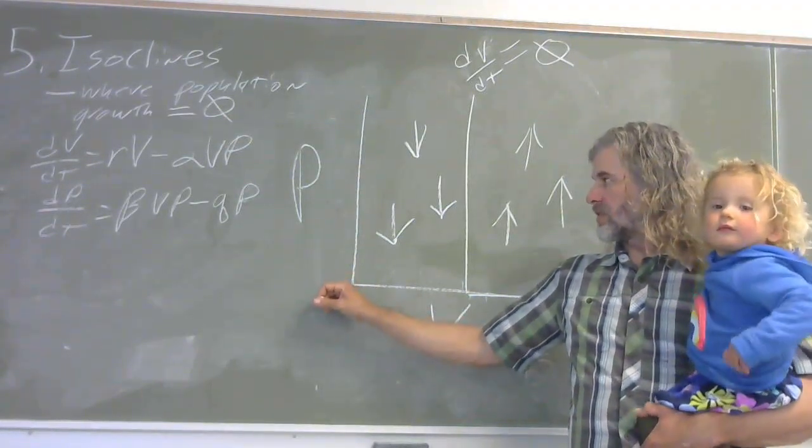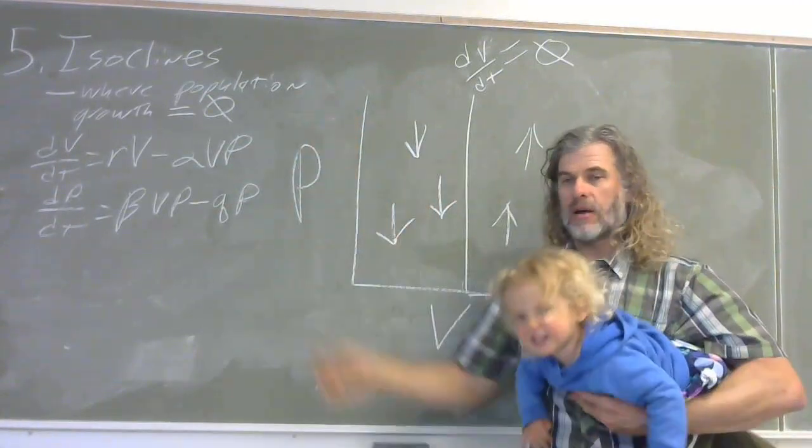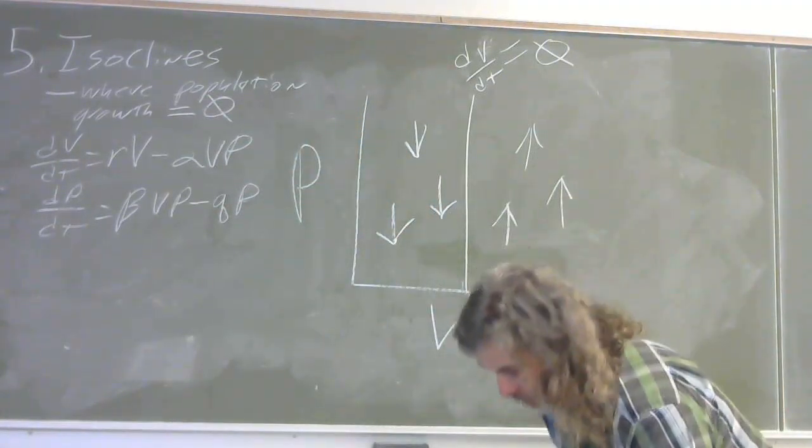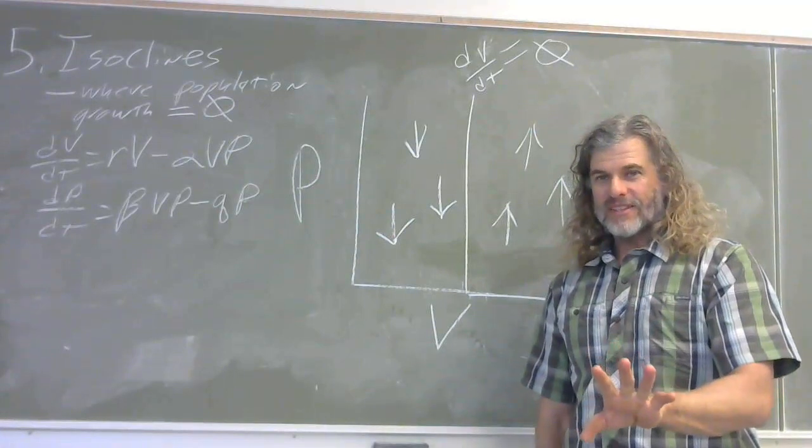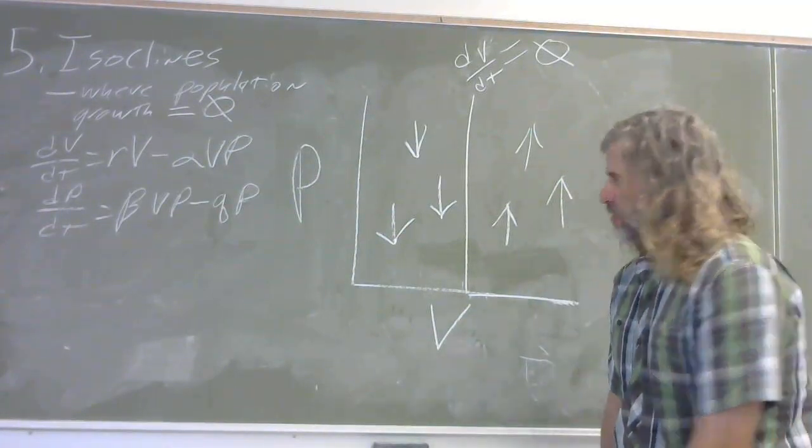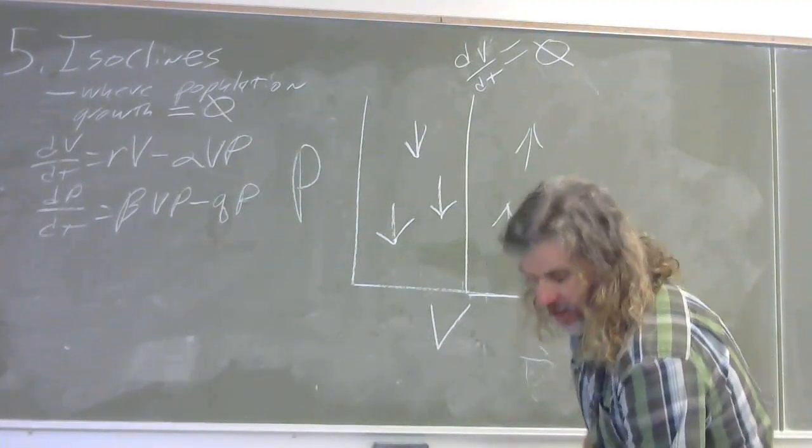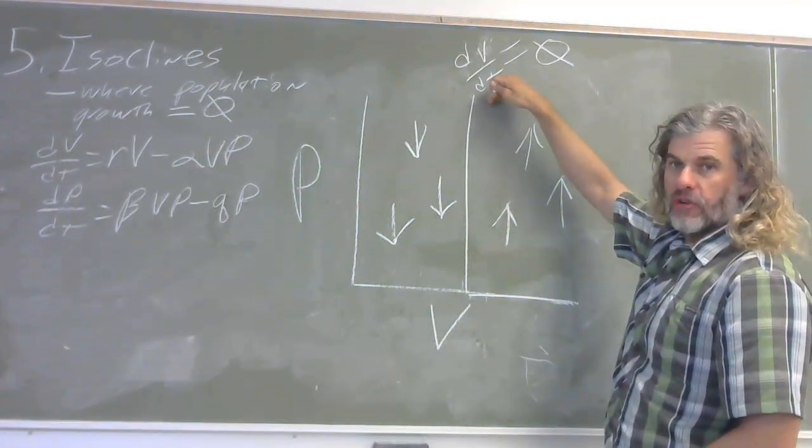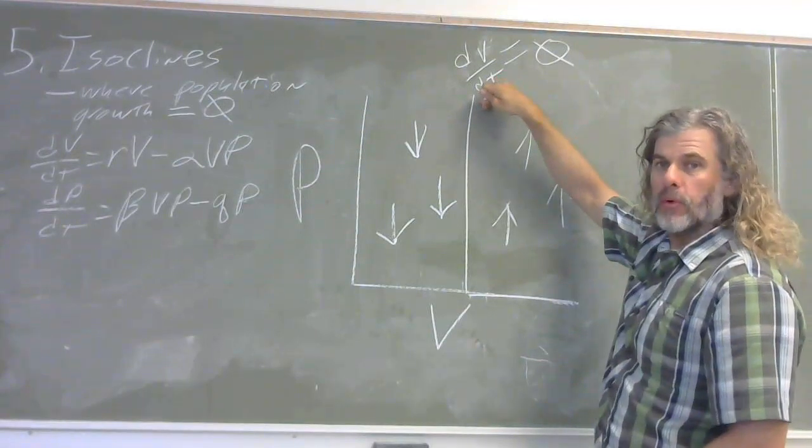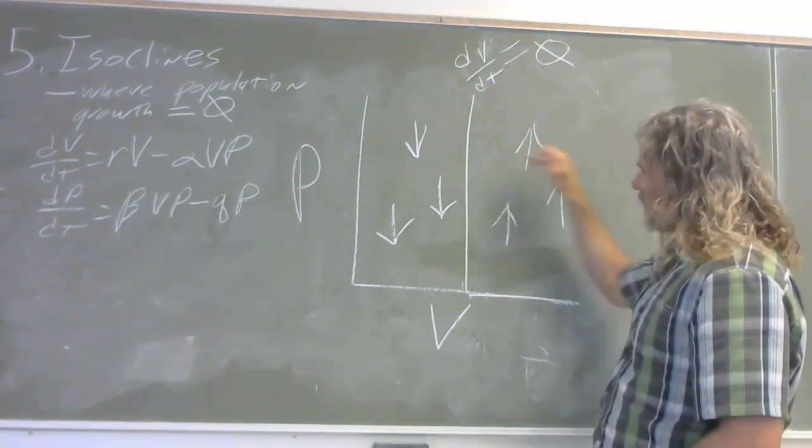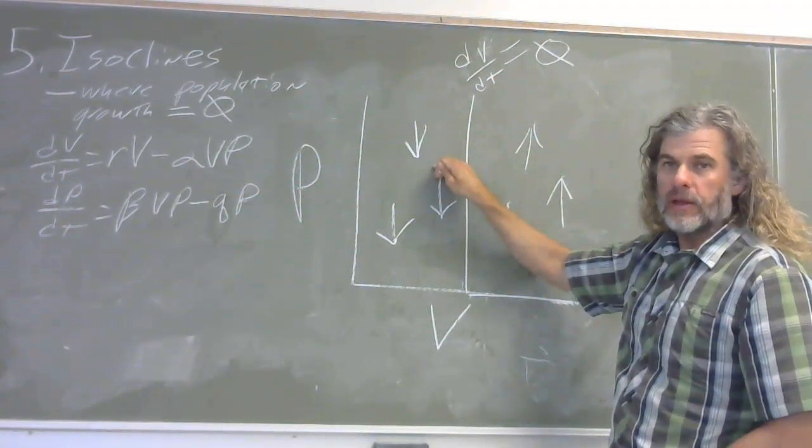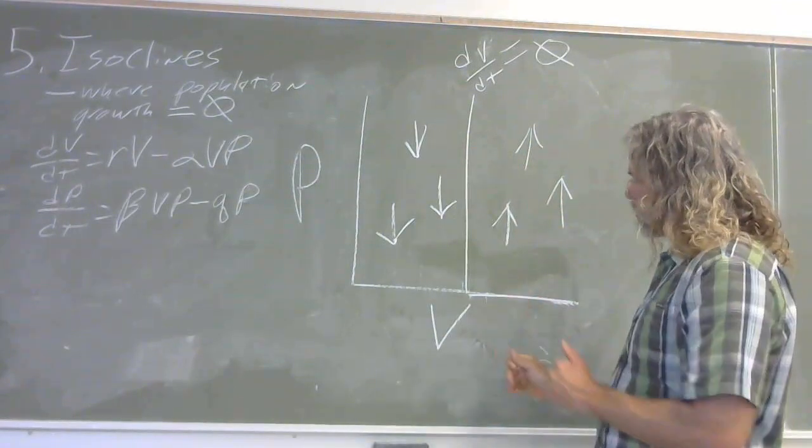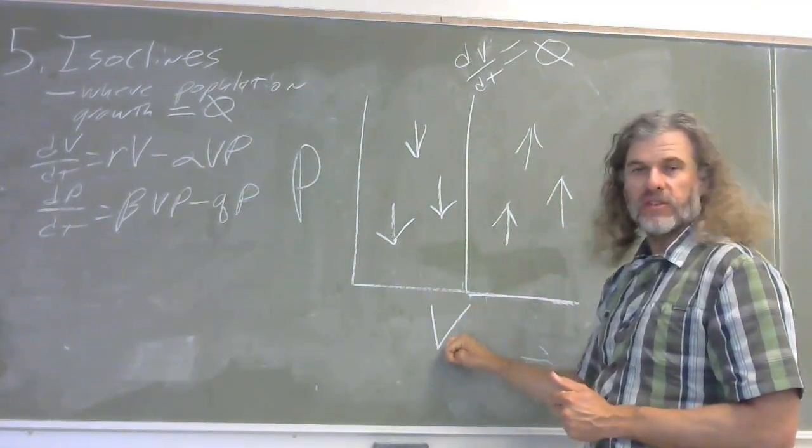because the victim population here increases from zero here into something greater than zero here. I've actually drawn the isocline for predators. And predators, which would be zero here, and then increase to some positive number. But the isocline works the same way for the predators, even though I previously identified the wrong one. The growth rate for the predators is zero at this point. And it's positive above that and negative below it. And how could that be?